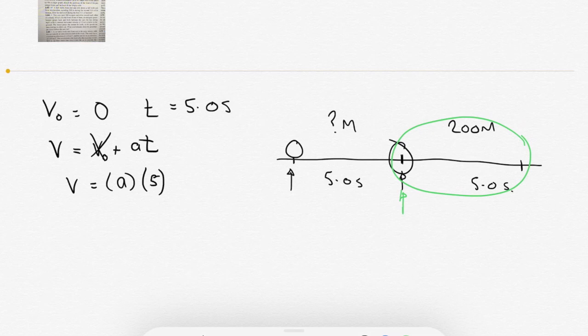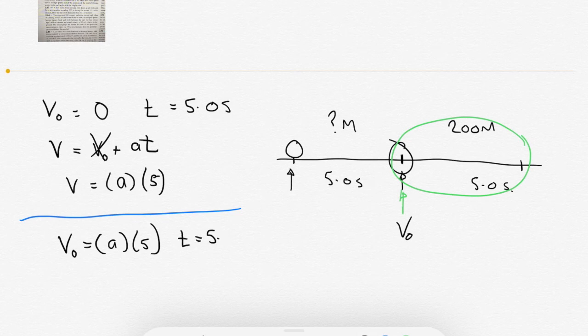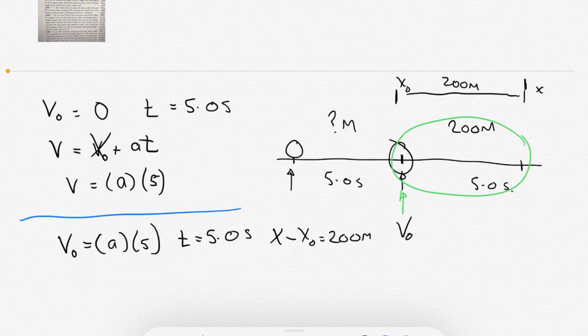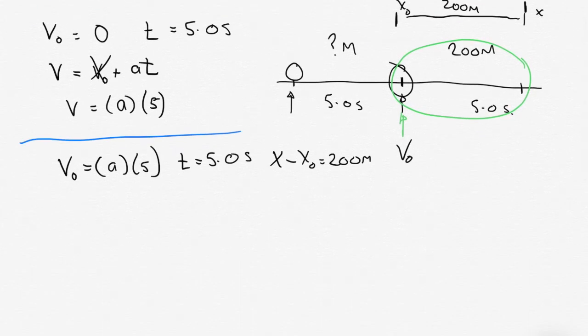For the second five seconds then, what have we got? V0 for the second five seconds is going to be equal to the acceleration times the five seconds which it's been taking place for, and the time is going to be equal to five seconds. We know that X minus X0 is going to be equal to 200 meters. That's plenty of information to apply to the equations of motion and try to figure out the acceleration. If we know the acceleration and we know how long that acceleration has been taking place for five seconds, then we can figure out the distance.